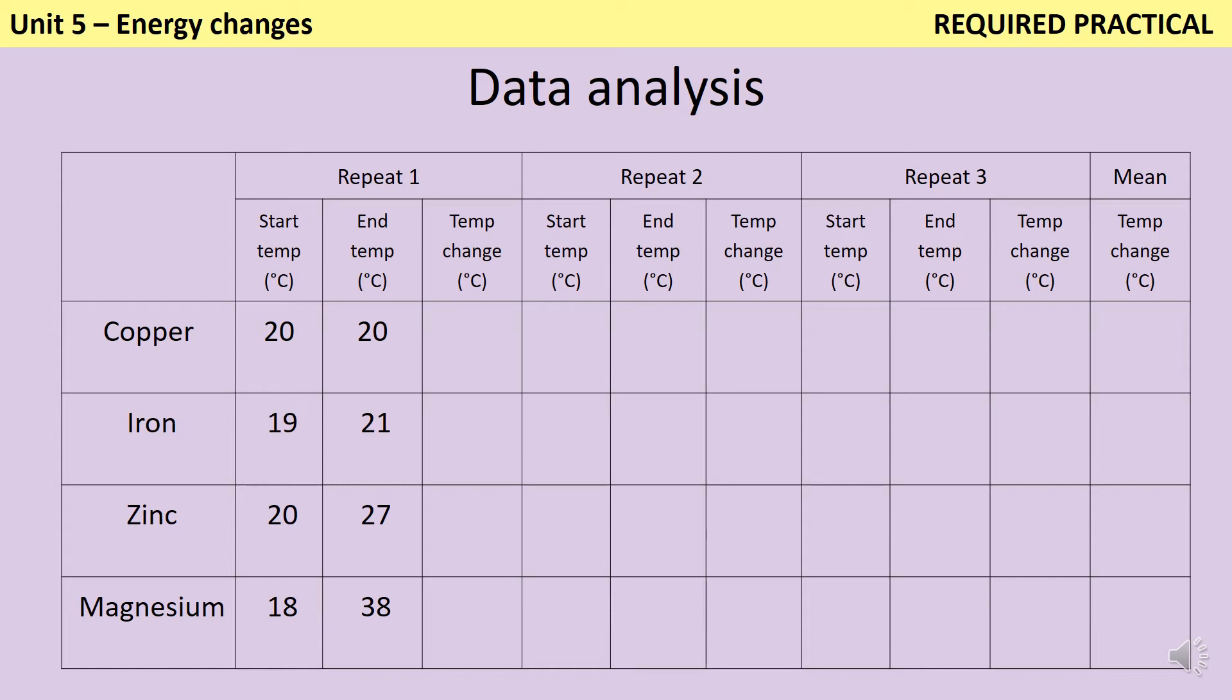As well as being asked to describe how to complete the practical, you may be asked to analyze data from it. The first thing that you could be asked to do is to calculate the temperature change for a reaction. And this is often combined with questions in which they give you diagrams of thermometers and ask you to accurately read what the reading of a thermometer is. So in this question, I've just given you a partially filled in table, and if I look at my data for copper, I would see that the temperature there hasn't changed. And then for iron, the temperature has gone up by 2. Just pause for a second and work out what the temperature change for zinc and magnesium should be. Hopefully you were able to calculate that this was 7 degrees C and also 20 degrees C.